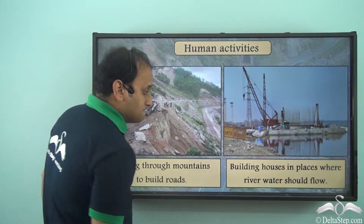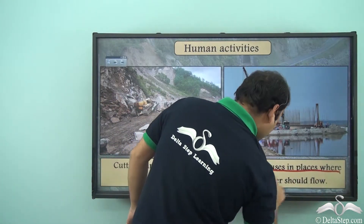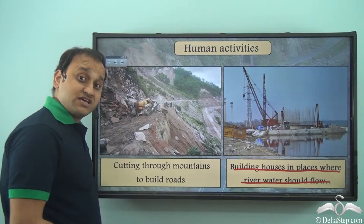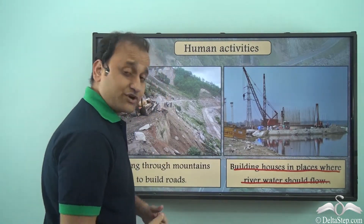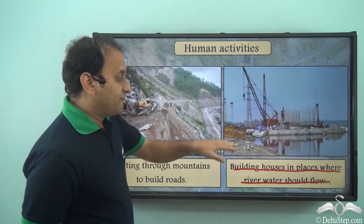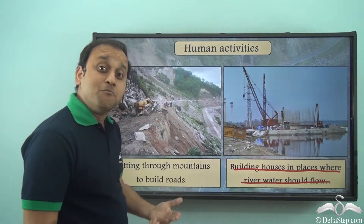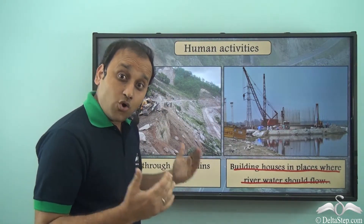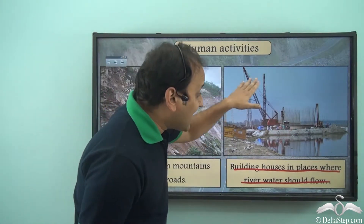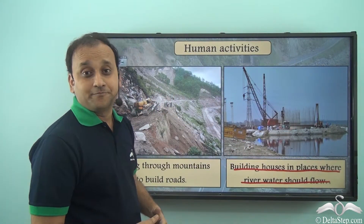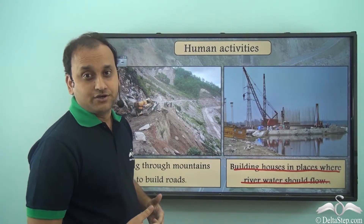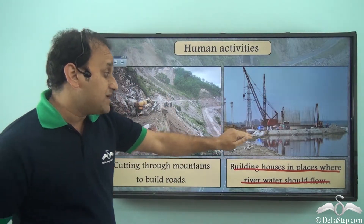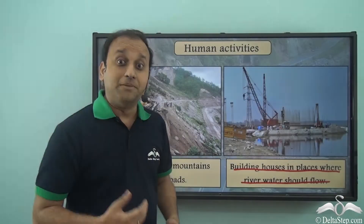Apart from that, building houses in places where river water should flow also results in natural disaster. Whenever this river will have more water than it can hold, the entire area will get flooded and all the houses built in this area will be harmed. So flood can be a major natural disaster due to building of houses in these areas.